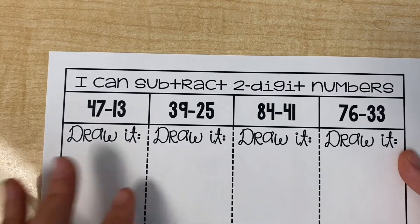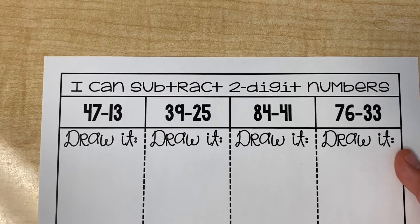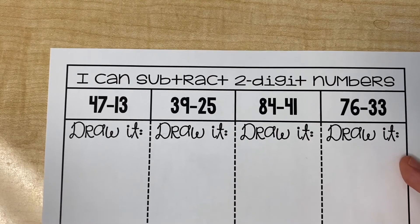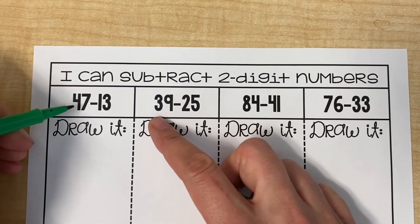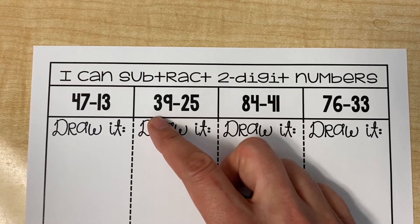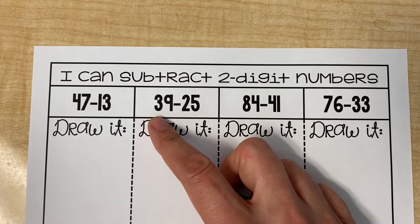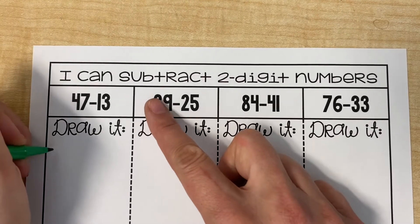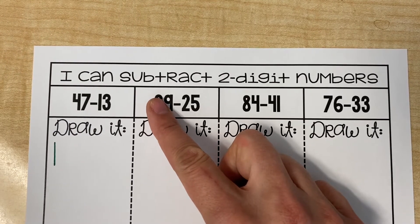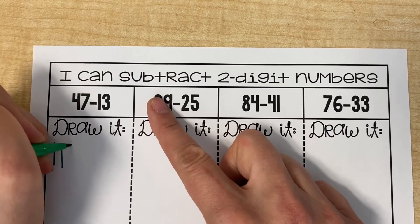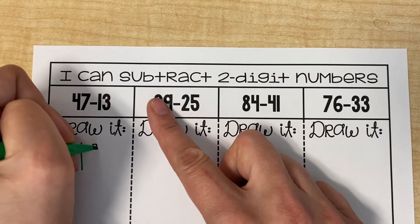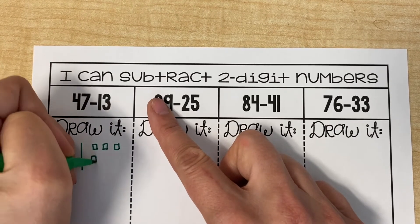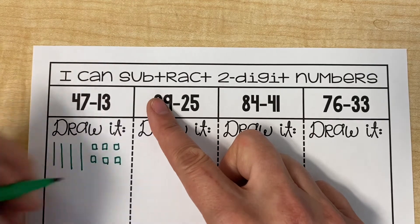The next way that we are going to practice subtracting two-digit numbers without regrouping is to draw it out using base 10 blocks. We did this very same strategy when we did addition, so this should not be something new to you. Our first equation is 47 minus 13. So I'm going to go ahead and draw out the number 47 using 10 rods and 1 cubes. I just use lines for my 10 rods. So I'm going to draw 1, 2, 3, 4 for 40. And now for our 7, I'm going to draw 1, 2, 3, 4, 5, 6, 7.